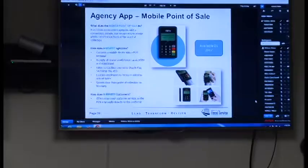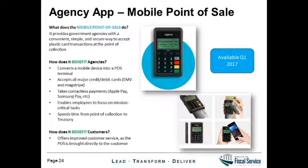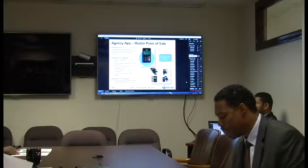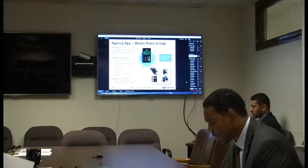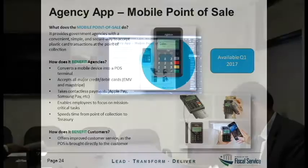In the first quarter of 2017, we plan to expand the agency app capabilities to the mobile point of sale. This device is manufactured by Ingenico, and it means agencies will not only be able to accept checks from wherever they are, but customers will also be able to pay by cash, both magnetic strip and EMV cards. They'll also be able to use contactless pay like Apple Pay and Samsung Pay. Ingenico will work directly in concert with your agency mobile device via Bluetooth technology. It converts your mobile device into a point of sale terminal, accepts all major credit cards, speeds time for the point of collection, and offers customer service as the point of sale is brought directly to the customer.